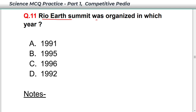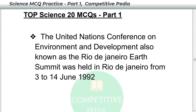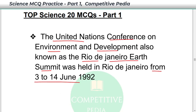Rio Earth Summit was organized in 1992 — option D. The United Nations Conference on Environment and Development, also known as the Rio de Janeiro Earth Summit, occurred from 3 to 14 June 1992.